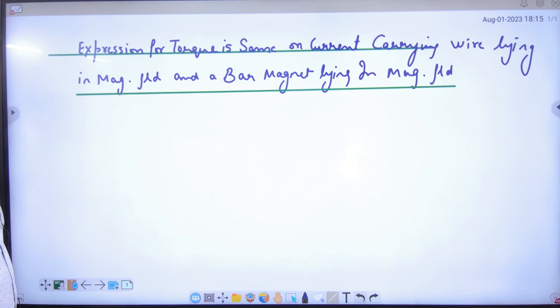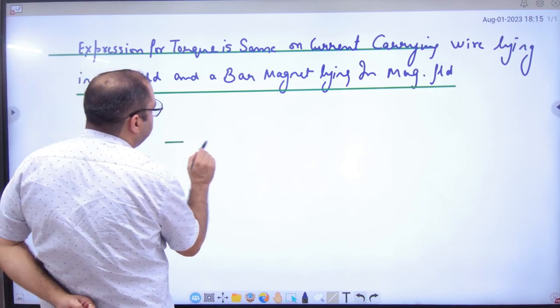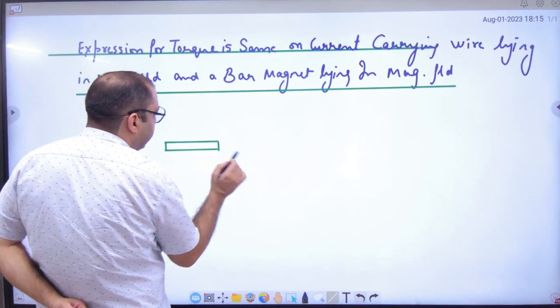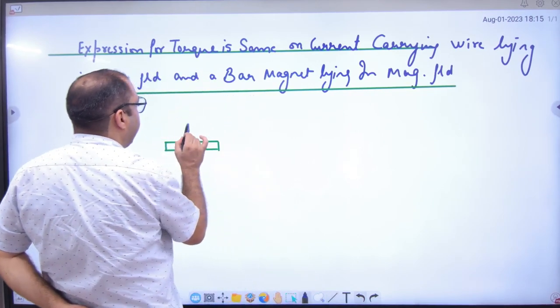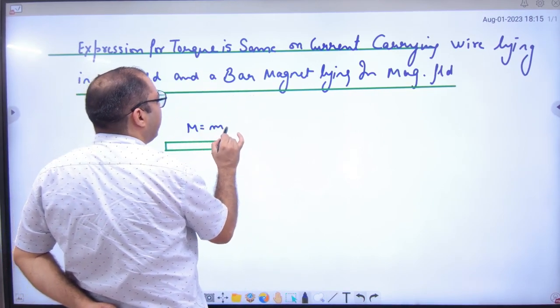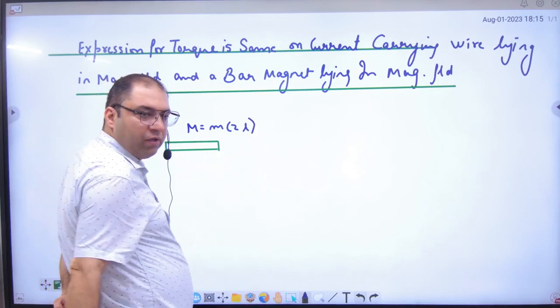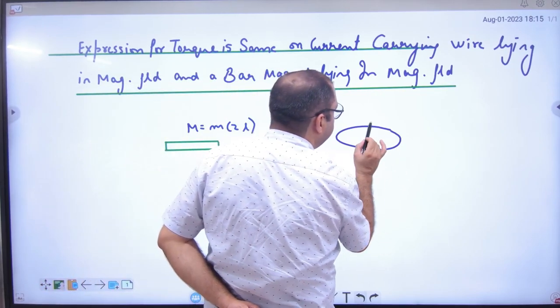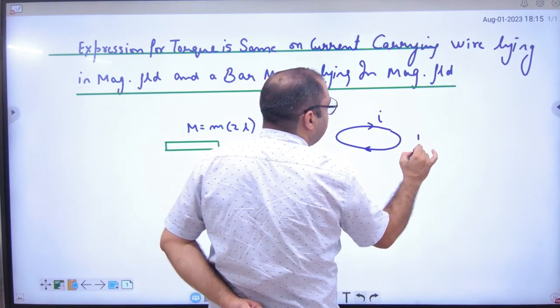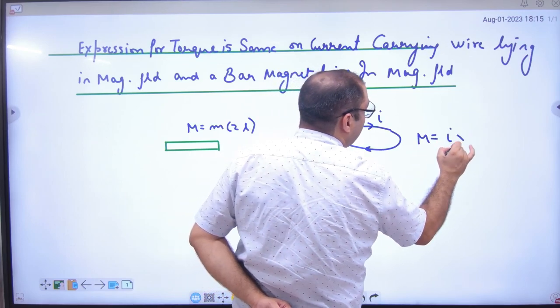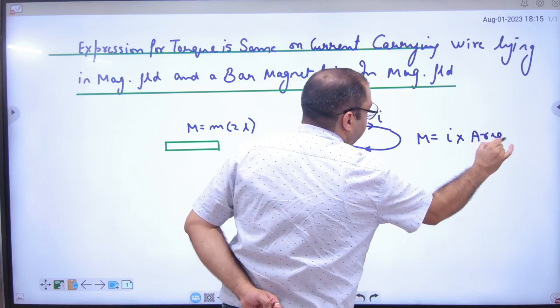So torque will remain the same. How? Let me tell you, if there is a bar magnet and you calculate capital M, the formula is different. M into 2L will be the formula. And if I say current carrying wire, capital M value, what will be? Current into area. Different.